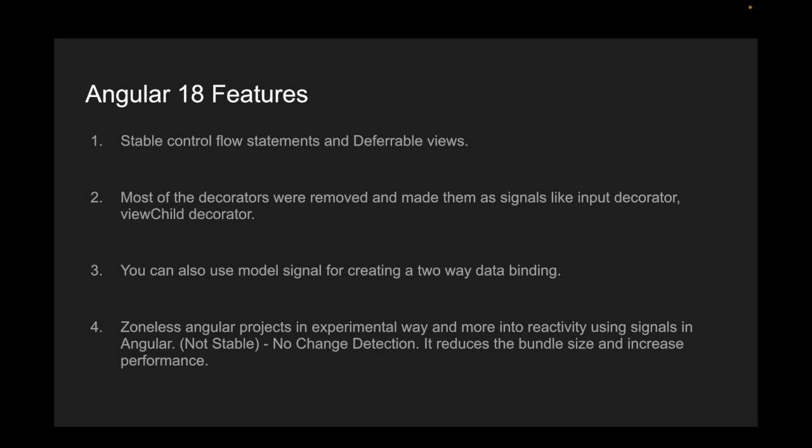They have also removed most of the decorators and made most of them signal-based — like the input decorator, view child decorator, and model. Everything has been made into a signal-based system. Angular is targeting to remove all of zone.js and make everything signal-based. In Angular 16 they released a few signals, and now in Angular 18 they have released more features like the input decorator, and view child and view children decorators have been replaced by signals to make it more performant.